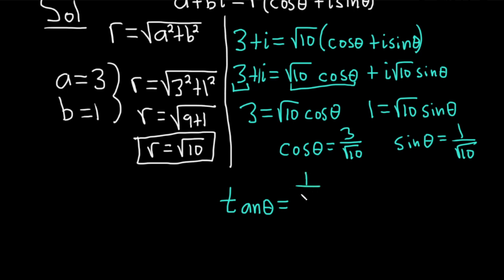So it's 1 over root 10 over 3 over root 10. This is equal to 1 over root 10. And when you divide by 3 over the square root of 10, you're basically multiplying by the reciprocal. So this is the square root of 10 over 3. You get 1 over 3.